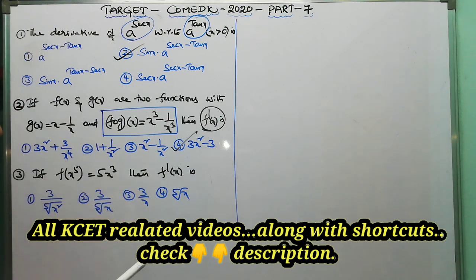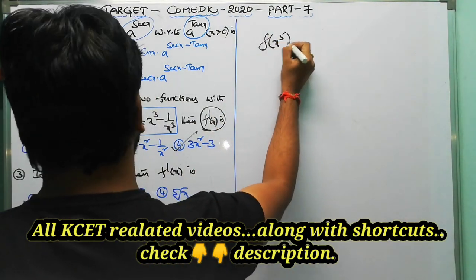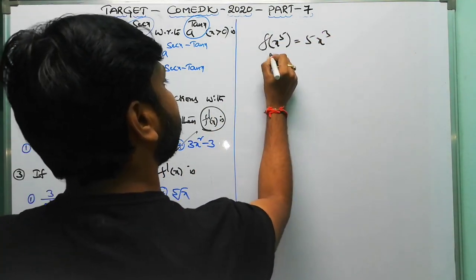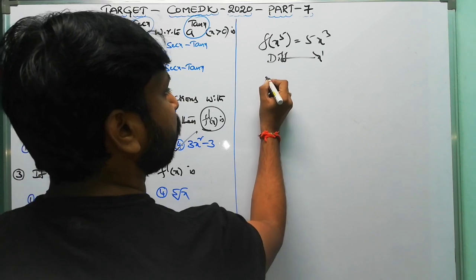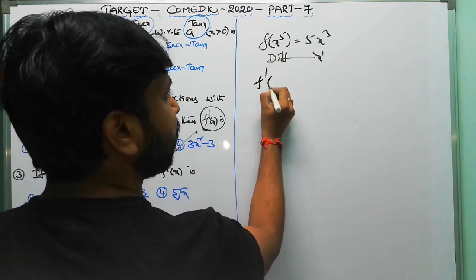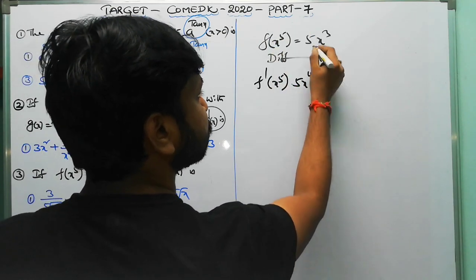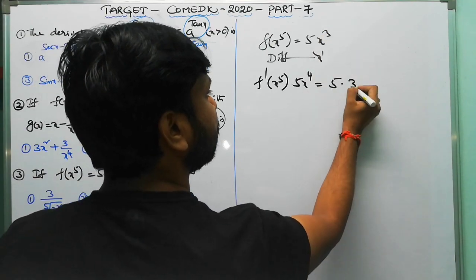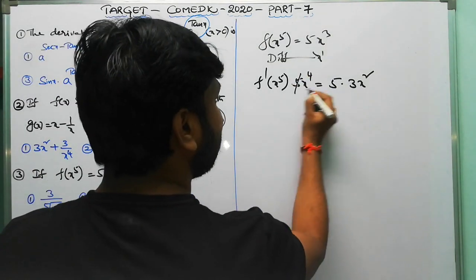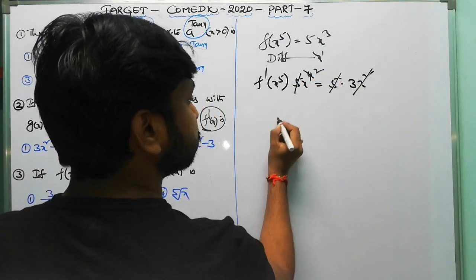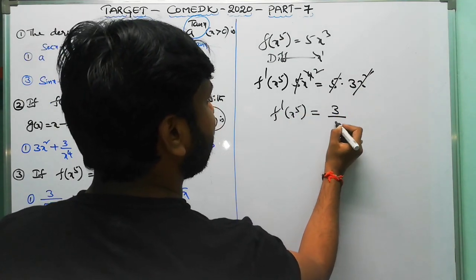Next question: if f(x^5) = 5x³, find f'(x). Differentiate both sides with respect to x. The left side gives f'(x^5) · 5x^4 by the chain rule. The right side gives 5·3x² = 15x². The 5s cancel, giving f'(x^5) = 3x²/x^4 = 3/x².